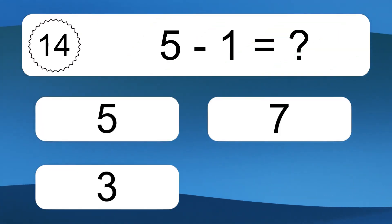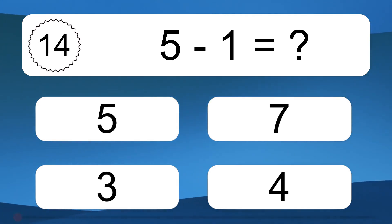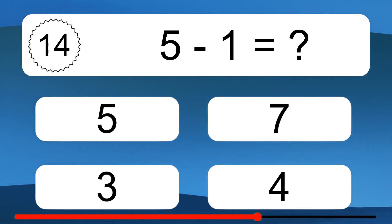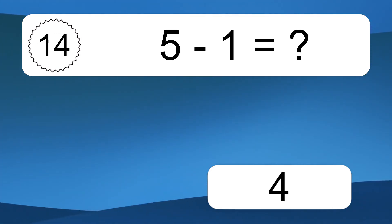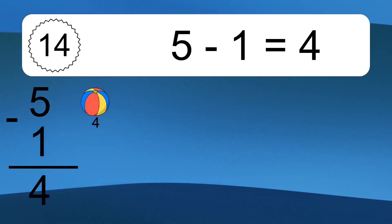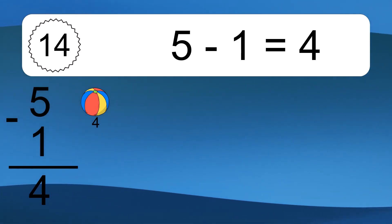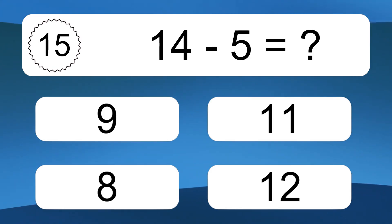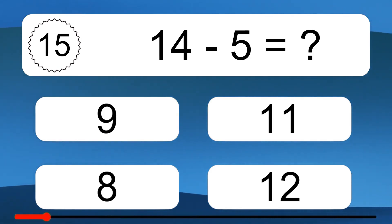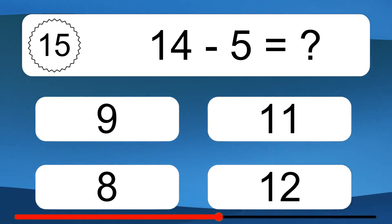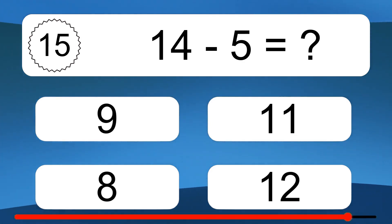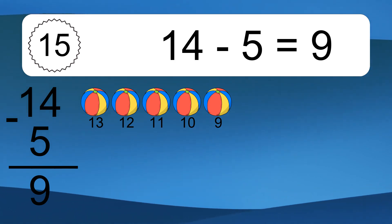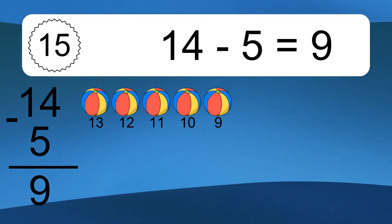5 minus 1 equals what? 5 minus 1 equals 4. Let's count it. 14 minus 5 equals what? 14 minus 5 equals 9. Let's count it. 13, 12, 11, 10, 9.